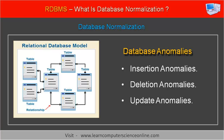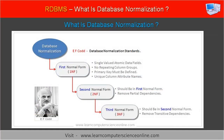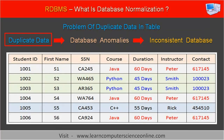Let us now understand various database anomalies caused due to data redundancy. There are three types of database anomalies triggered by duplicate records, typically in an un-normalized table. These database anomalies are: insertion anomaly, update anomaly (also referred to as modification anomaly), and deletion anomaly. The duplication of data in the table and the consequential database anomalies is the most common cause of an inconsistent state of the database.